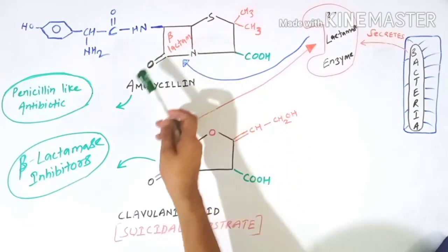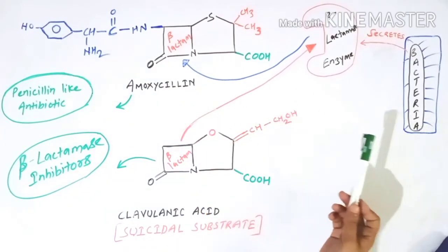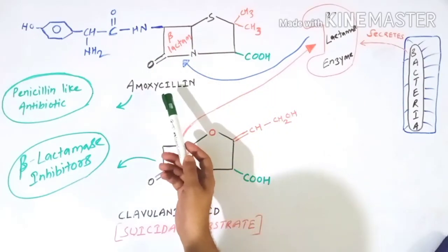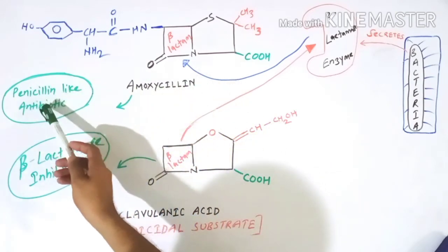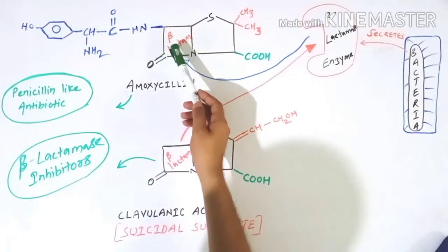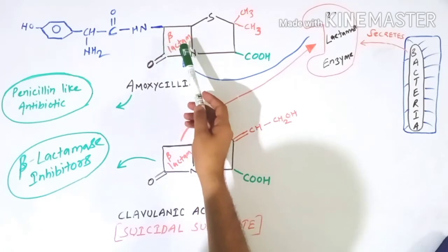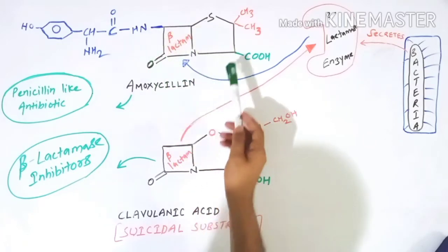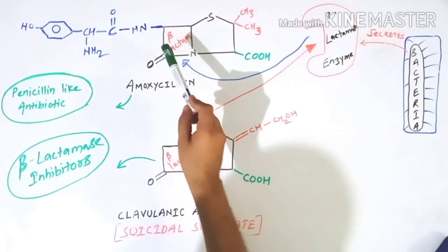In order to answer this question, we first need to understand the structure of amoxicillin and the mechanism by which it kills bacteria. Amoxicillin is a broad-spectrum antibiotic — it kills both gram-positive and gram-negative bacteria. It has a penicillin-like structure; this amoxicillin has a beta-lactam ring, which is a four-membered cyclic nucleus fused with a thiazolidine ring.